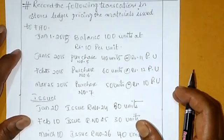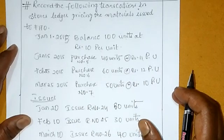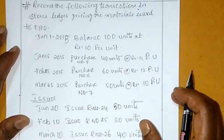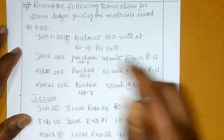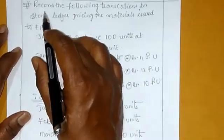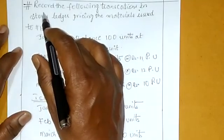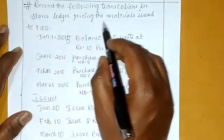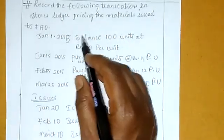Hi everyone, this is FIFO method problem discussion. In the previous video we discussed the FIFO problem. Now we start the problem: record the following transactions in store ledger pricing the material issue using FIFO method.